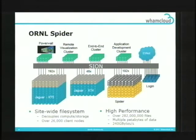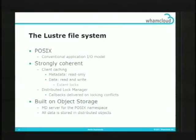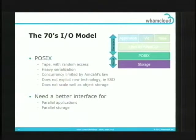Lustre is POSIX-oriented, coherent, and supports metadata caching with a DLM. Although there's a metadata server for the POSIX namespace, data is stored on distributed objects. The downside of Lustre is POSIX is basically a 1970s I/O model — the big innovation over tape is random access, but random access really slows things down. The concurrency model based around a spindle has been fine, but when you get an SSD that demands a much higher amount of concurrency per device, POSIX isn't going to do it for us. The POSIX namespace also doesn't work well when you're creating billions of objects.